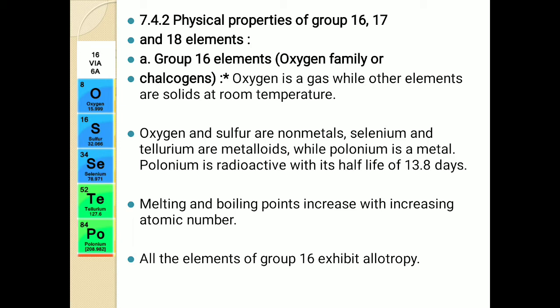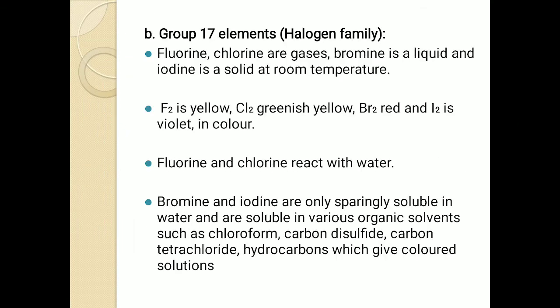Carbon shows diamond, fullerene, and graphite as allotropes. That means it exists in more than one form at room temperature — this is called allotropy. In the same way, all of the elements of group 16 exhibit allotropy.